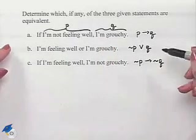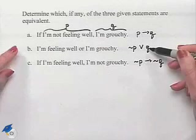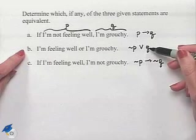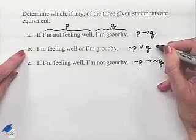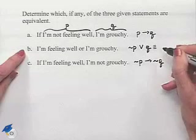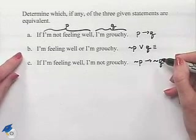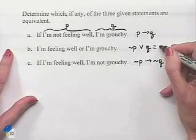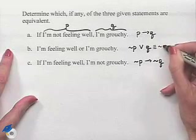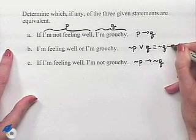Now we have two conditionals but our middle statement is written as a disjunction. We're going to change that first into a conditional in order to compare. To change it, we're going to rewrite this as if not Q then P.